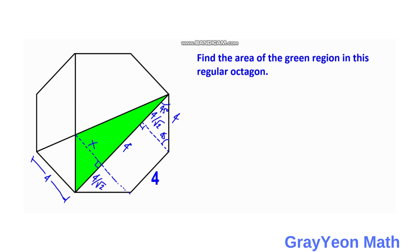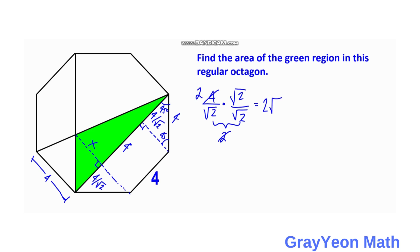To make things simpler, we rationalize four over square root of two. Simply multiply by square root of two over square root of two. The denominator becomes two, so four divided by two is two. This gives us two square root of two. So that distance is two square root of two.